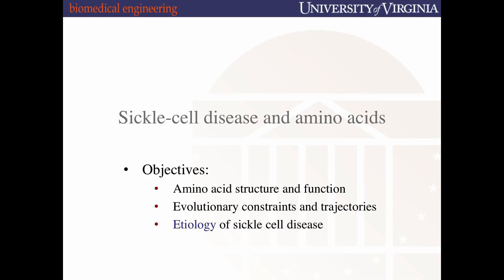We're then going to work through the course material — the details of cell and molecular biology relevant to that disease — and always end the lecture by readdressing that clinical application with the new information we've given you. The idea is to give you context; we're not just preaching from Alberts' cell and molecular biology textbook. All of the stuff we're teaching is critical to human disease. Today, we're going to talk about sickle cell disease and the role amino acids and protein structure play in the etiology of that disease.